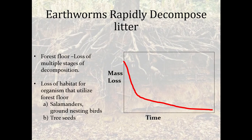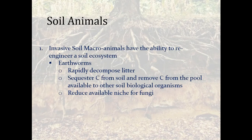We see a very large decrease in mass in a short period of time at the beginning of decomposition when earthworms are present. This can result in the loss of habitat for things like salamanders, ground-nesting birds, and certain tree seeds. Invasive animals have the ability to re-engineer or change a soil ecosystem. Earthworms can rapidly decompose litter, sequestering carbon from the soil, removing carbon from the pool available to others, and reducing the available niche for fungi — making them just one example of an invasive that can alter an ecosystem by changing the soil.